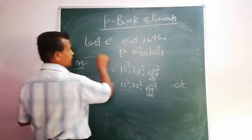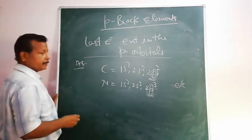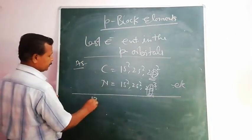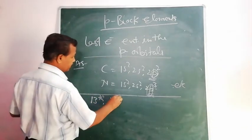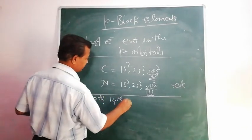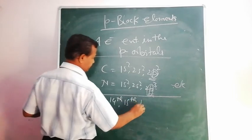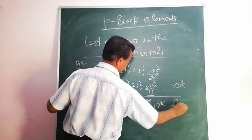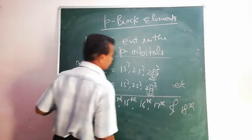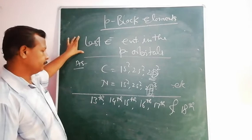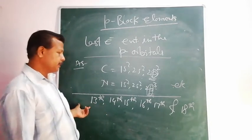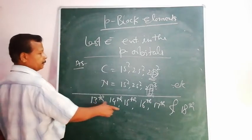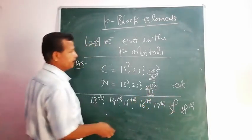In general, the P-block elements contain six groups — that is, the 13th group, 14th group, 15th, 16th, 17th, and 18th group elements are present in the P-block. These six periodic groups are known as P-block groups, and the elements of these are known as P-block elements.